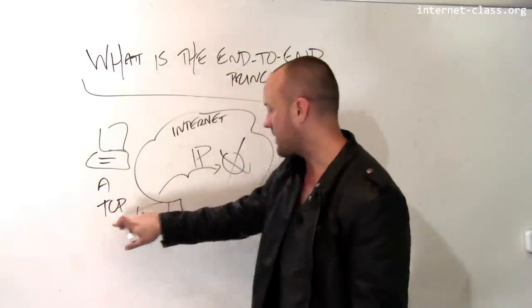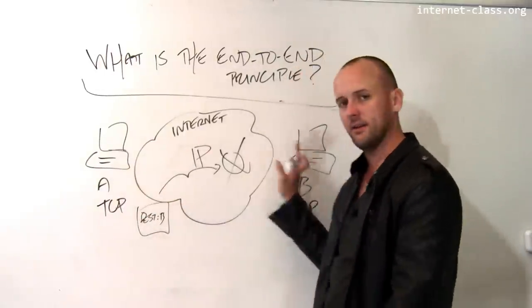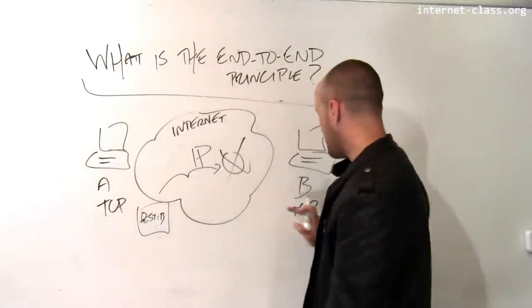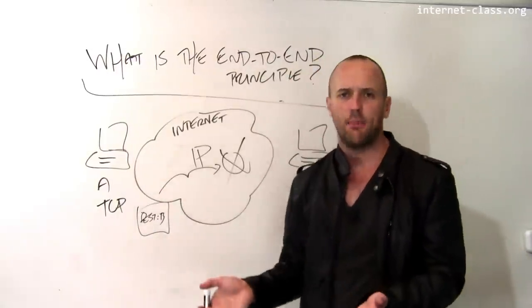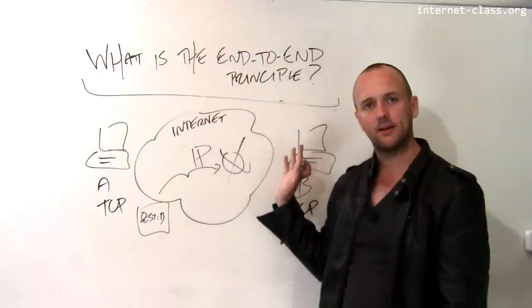So what happens is that TCP, which is running on A and B, needs to detect the fact that this packet didn't arrive and repair it. So what will happen is at some point, B will send a notification. B's TCP will tell A, hey, by the way, I never got that packet you said you were going to send me. And then A will retransmit the packet at some later point.